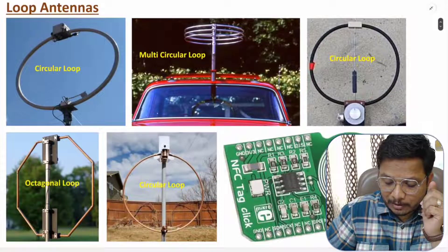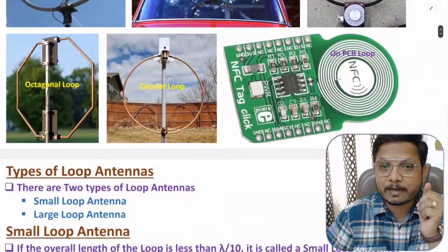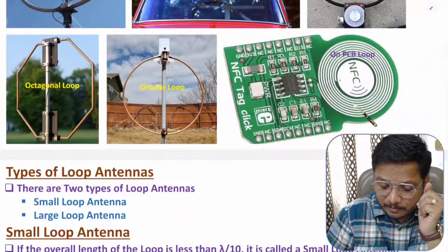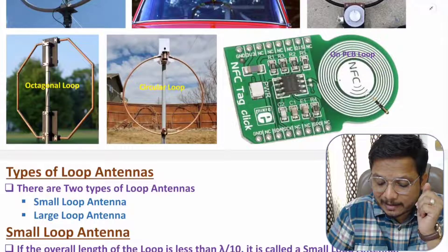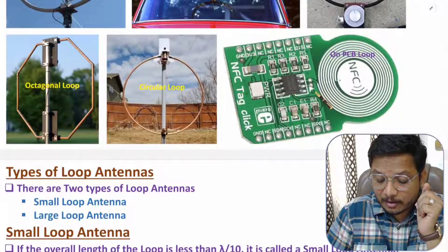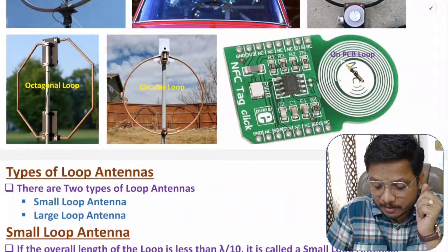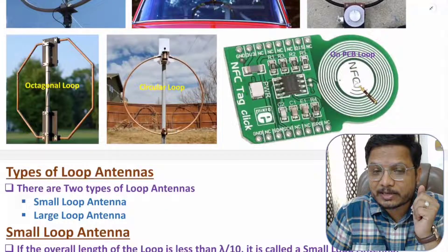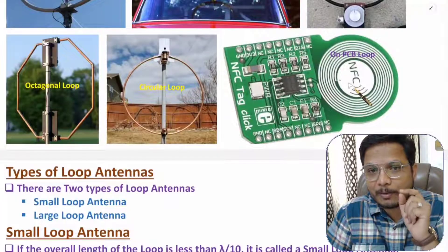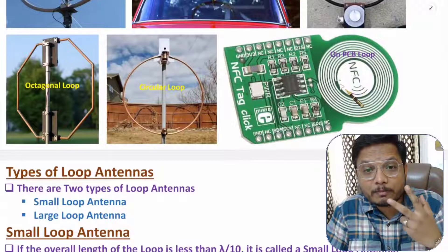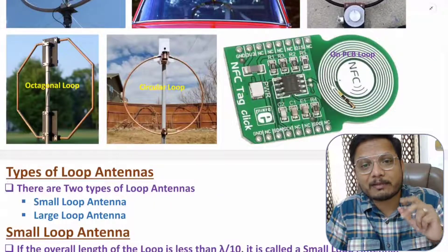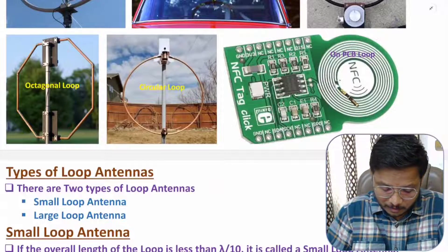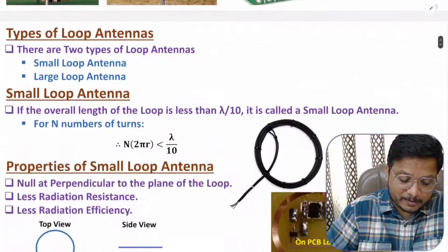On a PCB, a multi-loop antenna can be integrated. This is PCB communication with NFC, and that communication is happening via a loop antenna. So loop antennas can be integrated on a PCB as well. Now let us talk about types of loop antenna.